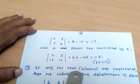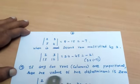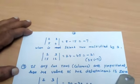The next property: if any two rows or columns are proportional, then the value of the determinant is zero.